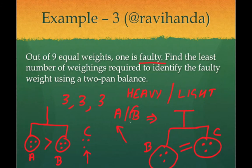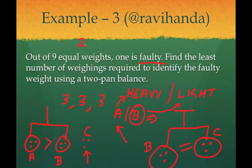If B and C come as unequal, then B is faulty. If A came as faulty that means the faulty weight is the heavy weight; if B came as faulty that means the faulty weight is the light weight. All these things can be figured out, but you required one extra weighing for it. So the total number of weighings required is two — your original answer — plus one extra to figure out whether the fault is with the heavy one or the light one. Total number of weighings required will be three.